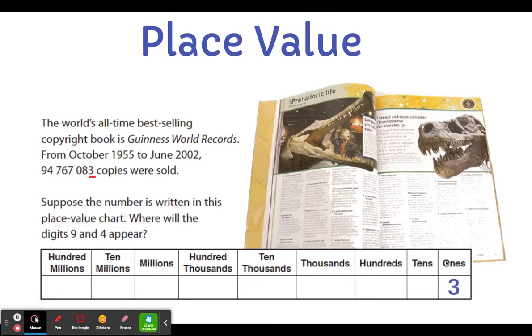So I find it easiest to start with the ones, or sometimes we also call that the units. Unit means the same as one, it means a single unit of something, which is a one. So our first digit is a three, it goes in the ones column.